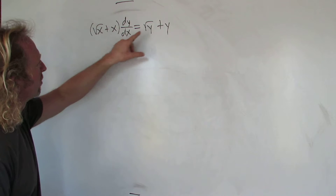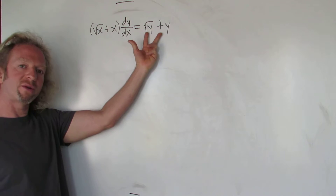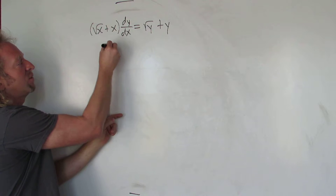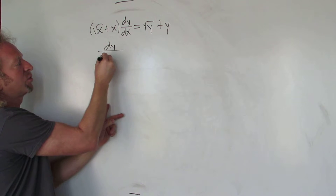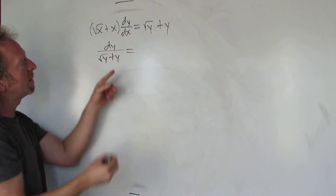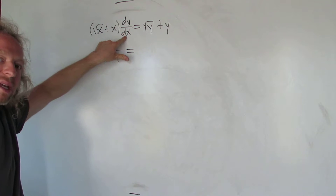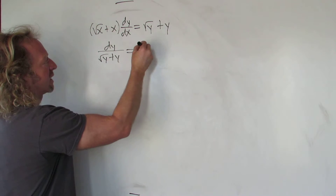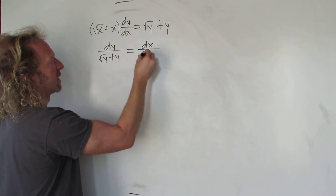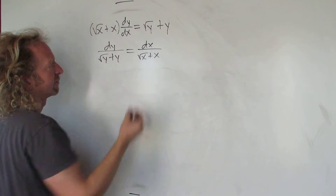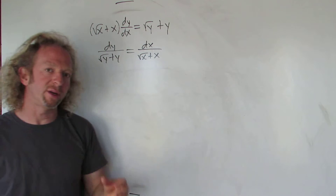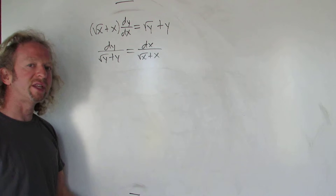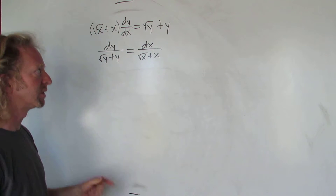So to do that, we'll divide both sides by the square root of y plus y. That'll give us dy over this, so we have dy over the square root of y plus y. And then we're going to multiply by dx and divide by this — in other words, multiply by the reciprocal of this quantity. So that would be dx over the square root of x plus x. What we did was we separated it: all the y's with the dy on one side, and all of the x's with the dx on the other side.